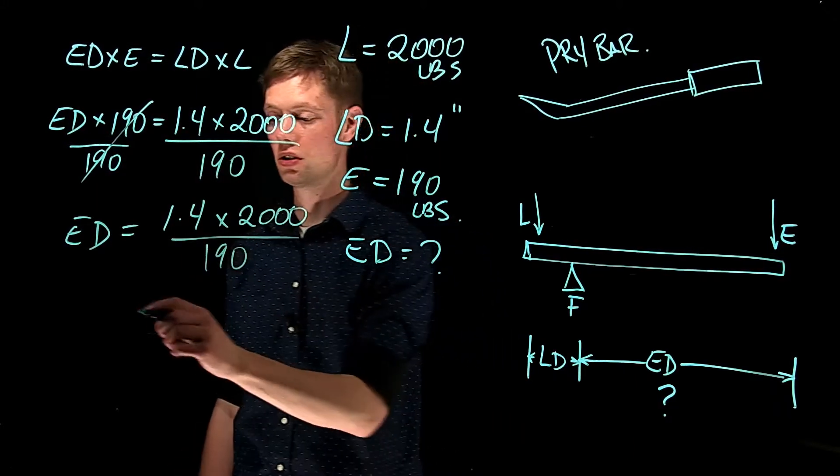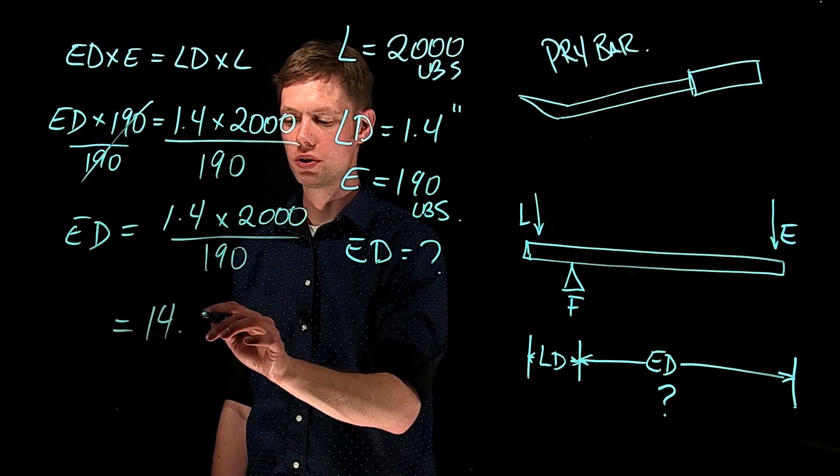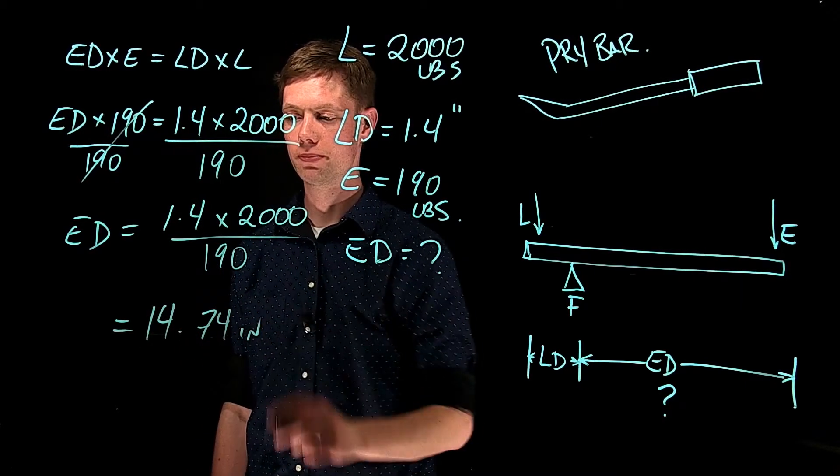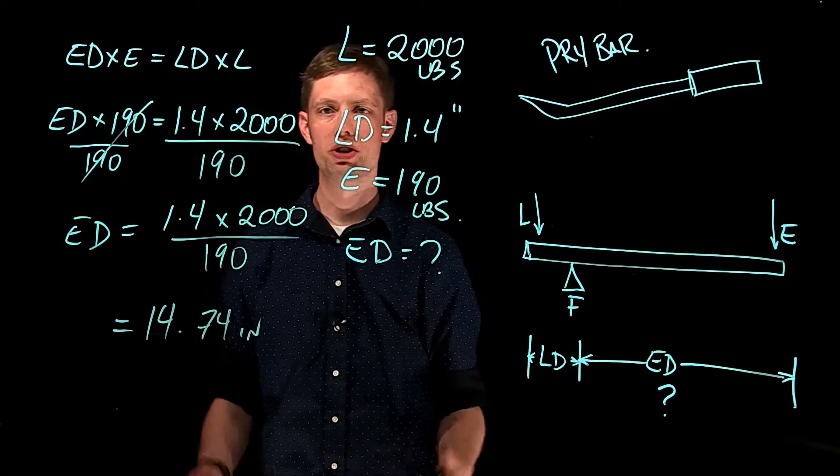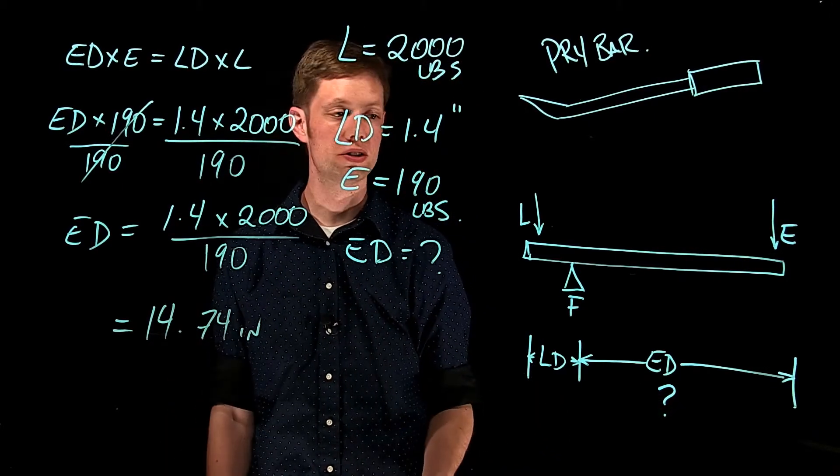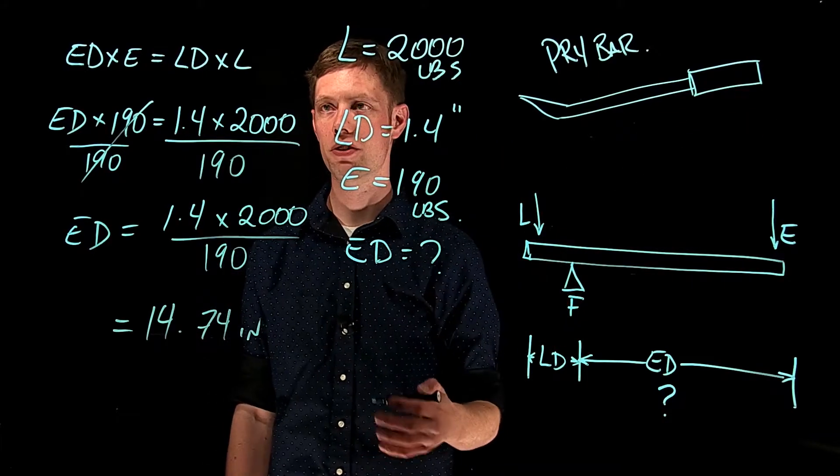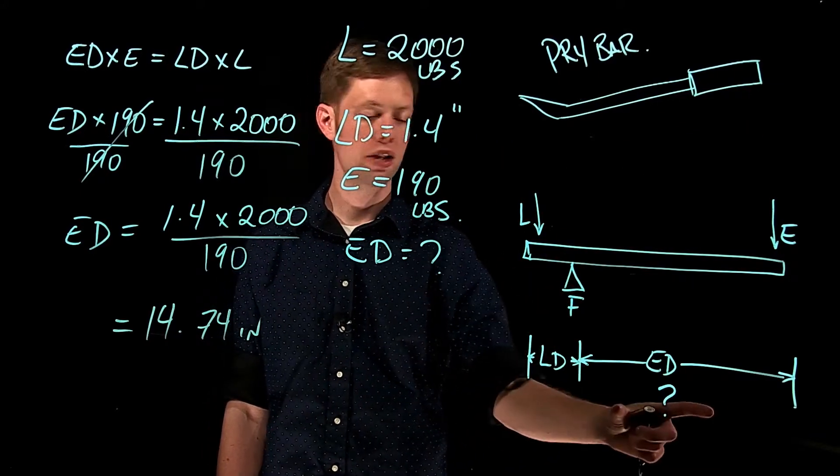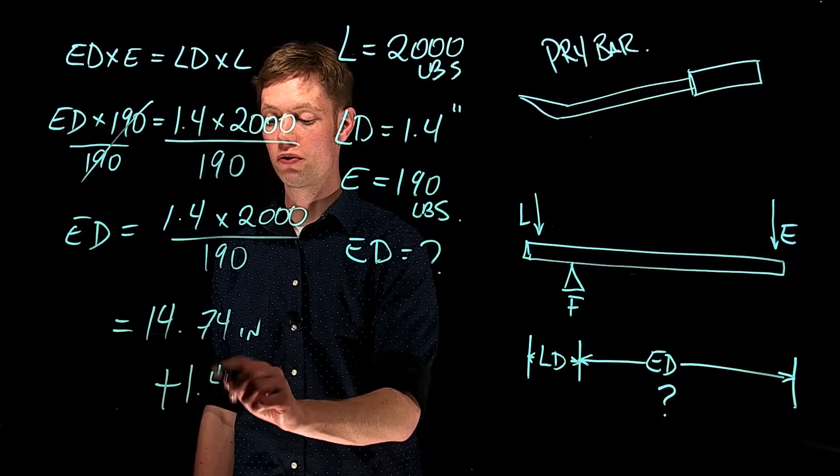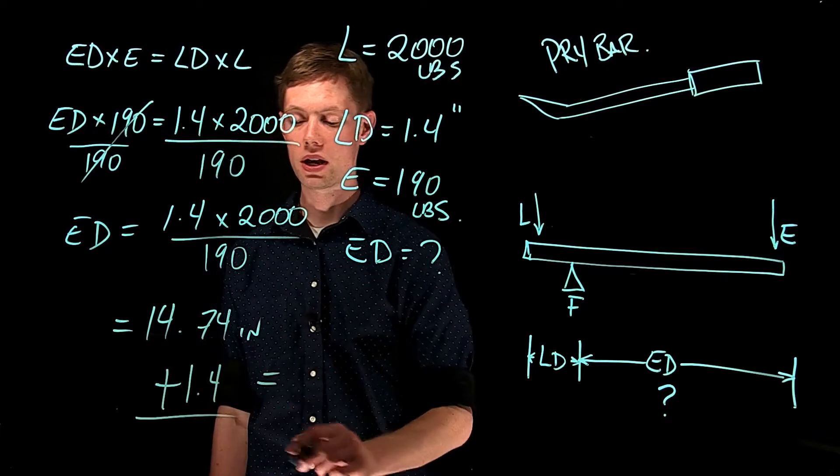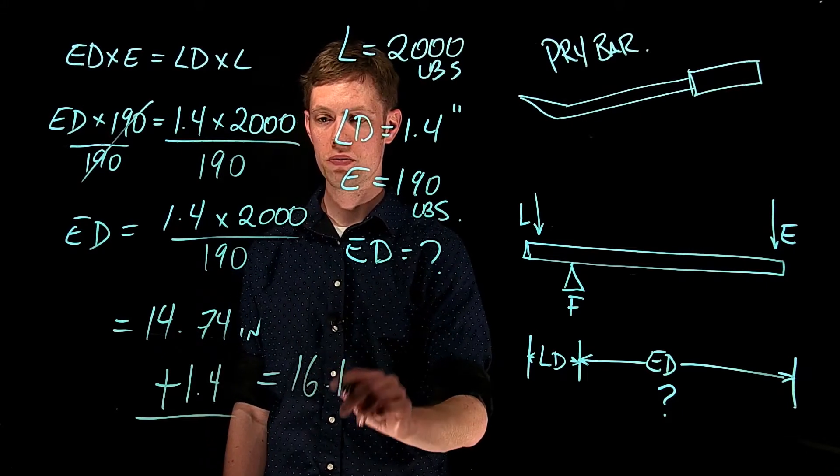Solving this would give us 14.74 inches as our effort distance. So here, the question does read what is the overall distance or the overall length of the pry bar. We need to add our load distance and our effort distance together. So if I add 1.4 to this, it will give me an answer 16.1.